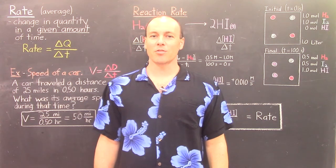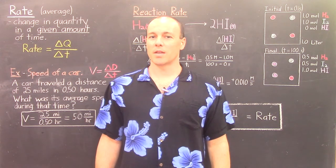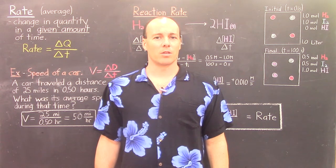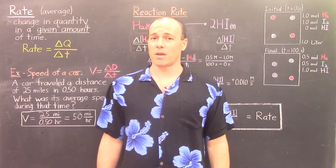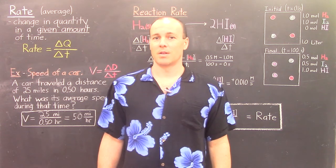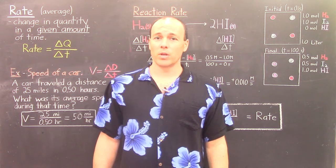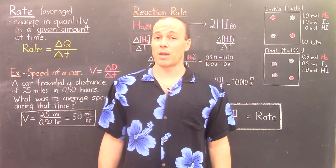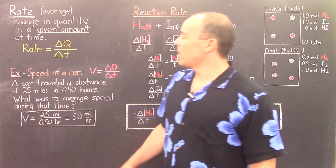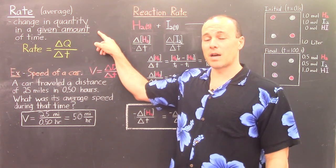Aloha! This lecture begins the third phase of our course, which is the chemical reaction rate. There are many chemical reactions and they all proceed at different rates — some are fast, and others are slow. But before we can talk about the chemical reaction rate, we need to understand something about rates in general. In general, a rate is a change in a quantity in a given amount of time.